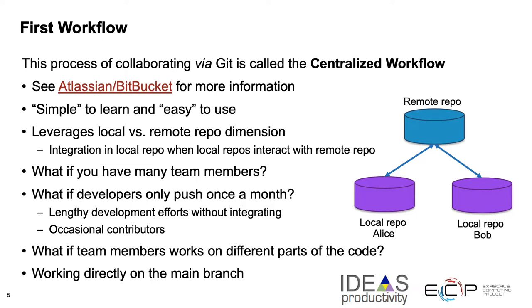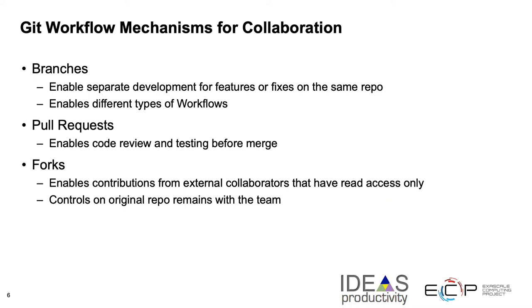The Atlassian Bitbucket site has information for many different types of workflows so you can look for more details of the models that I am explaining in this tutorial. Next we will look at the mechanisms that help us create workflows that are more amenable to collaboration. Those mechanisms are branches, pull requests, and forks. These mechanisms allow collaborators to build workflows and policies that aid collaboration.